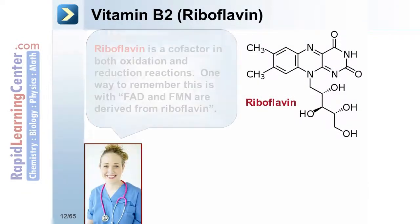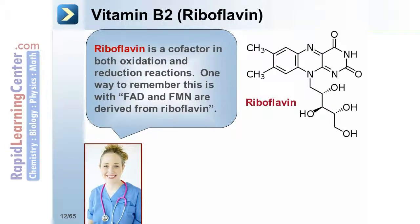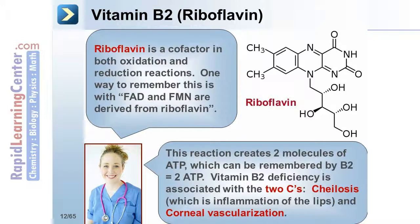Riboflavin is a cofactor in both oxidation and reduction reactions. FAD and FMN are derived from riboflavin. This reaction creates two molecules of ATP, which can be remembered by B2 equals 2-ATP. Vitamin B2 deficiency is associated with the two Cs: cheilosis, which is inflammation of the lips, and corneal vascularization.